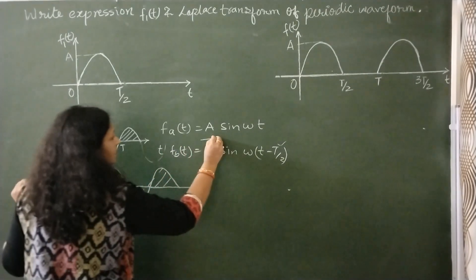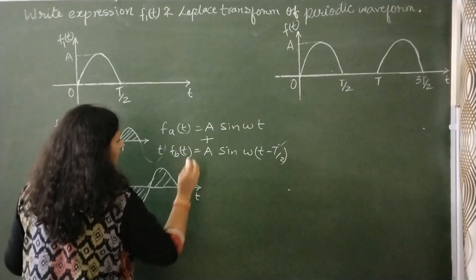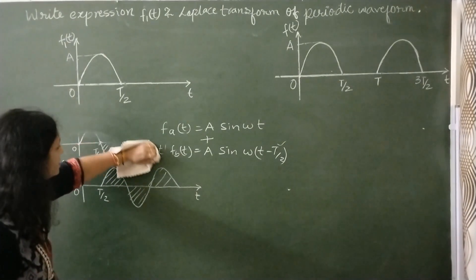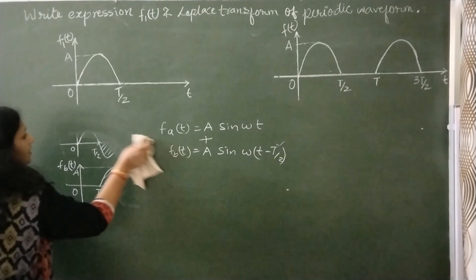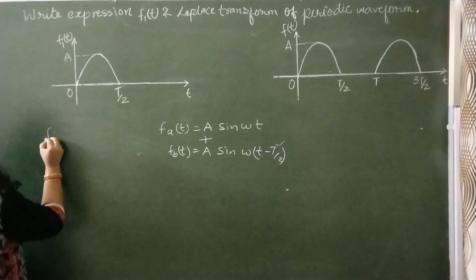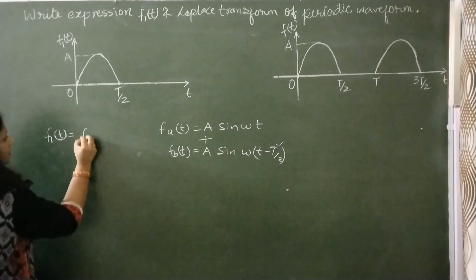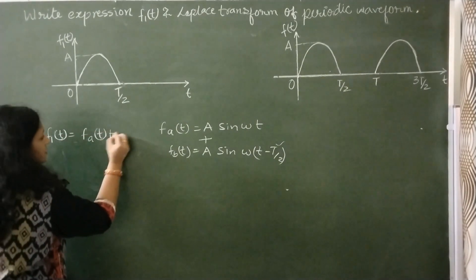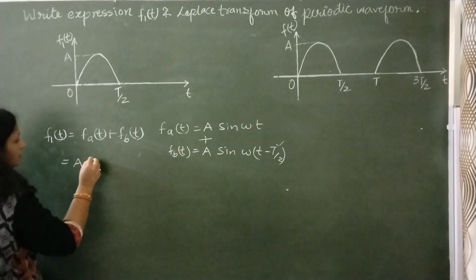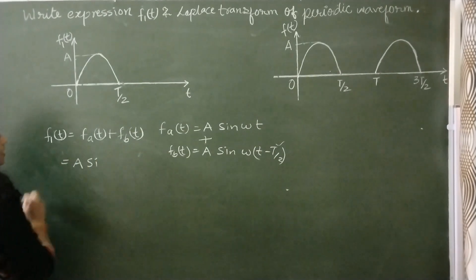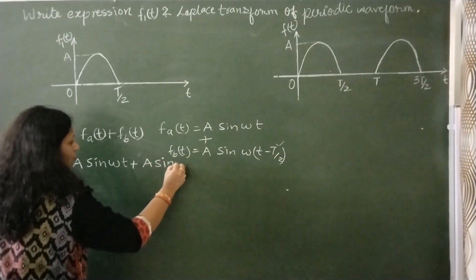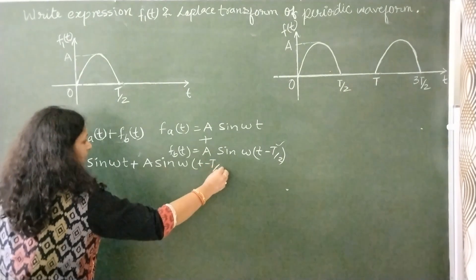So we can get this half sine wave by adding these two functions. F1(T) is the summation of F_A(T) and F_B(T), giving us the equation F1(T) = A·sin(ωT) + A·sin(ωT − T/2).